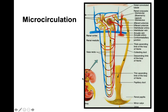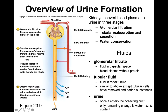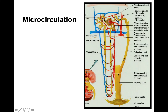Here we have the microcirculation showing the glomerulus, PCT, loop of Henle, DCT, and collecting duct. What's unique in this picture is the microcirculation — the capillary beds that sit alongside the loop of Henle — called the vasa recta. This is a specialized capillary bed found all along the nephron tubule that enables reabsorption and secretion back and forth between the tubule and blood, across the PCT, loop of Henle, DCT, and collecting duct.